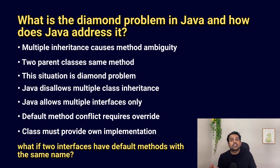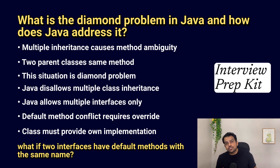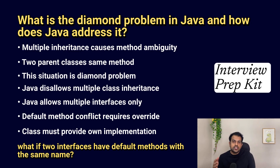A likely follow-up question is: what if two interfaces have default methods with the same name? If you know the answer, write it in the comment section and it will be pinned as the top comment. Questions like these are already available in my interview preparation kit — check the description if you want all questions and answers in one place. Now let's move to the next question.